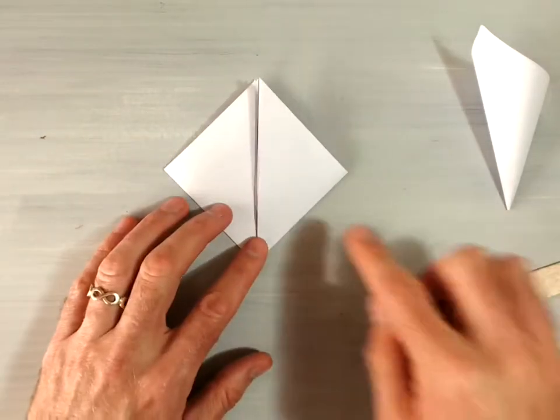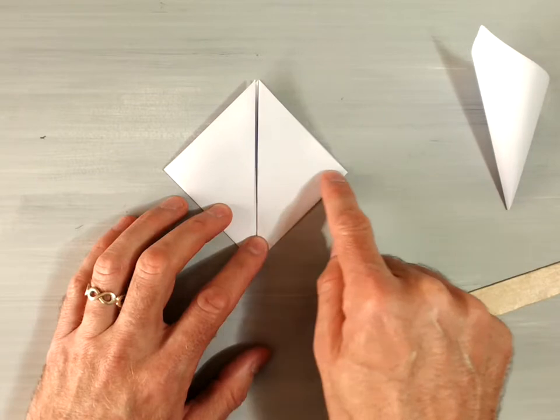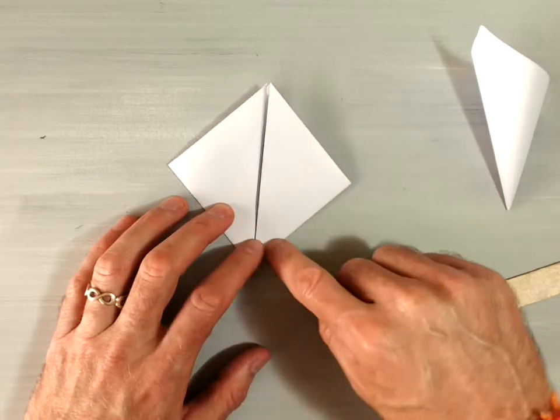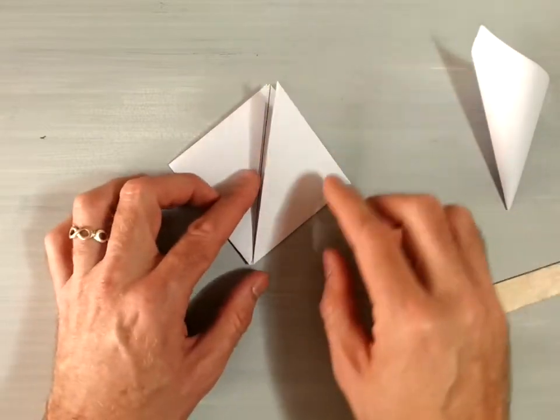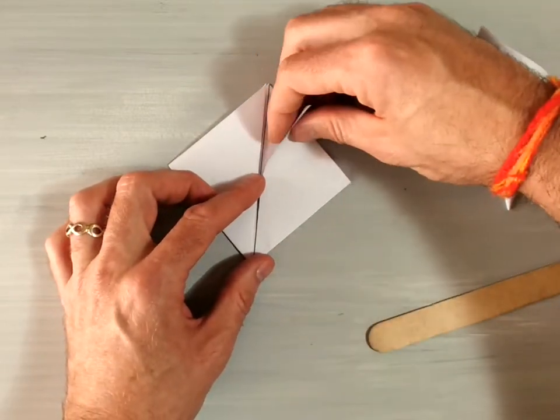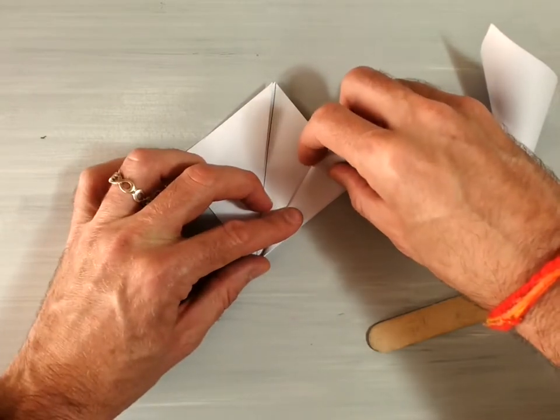At this point we're going to take this section and sort of divide it in half. If we were dividing it in half we would put a crease here, but we're actually going to divide this section in half on a diagonal. So you're going to take this inside edge and fold it towards the outside edge to create an isosceles triangle.